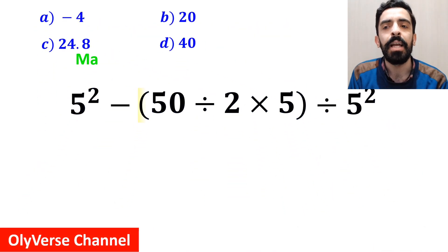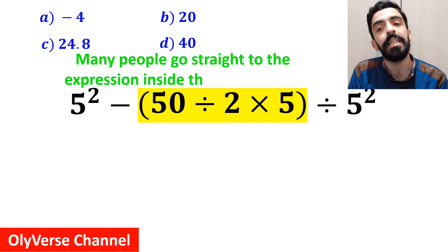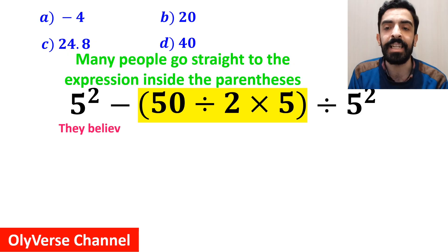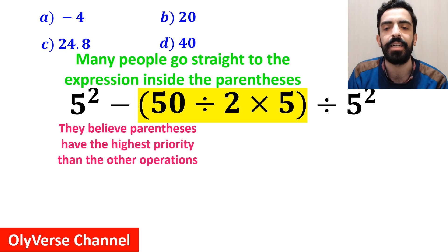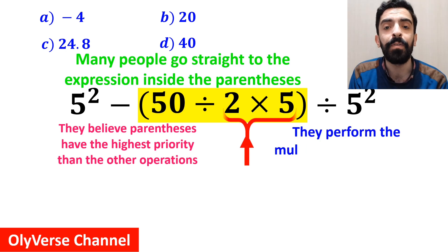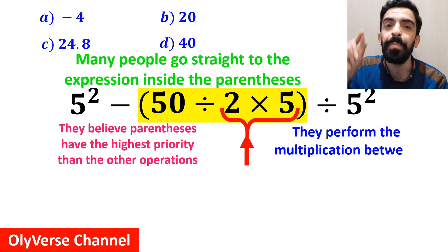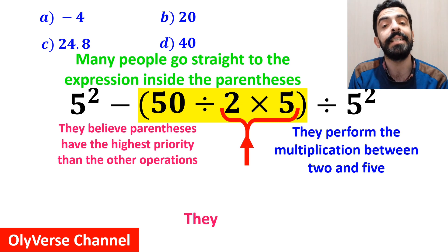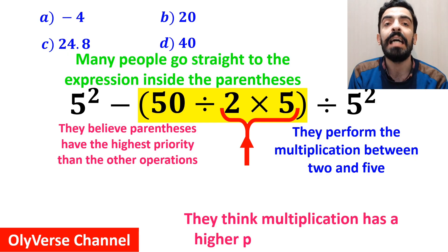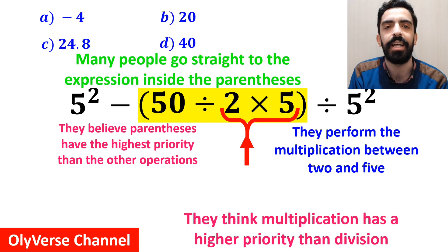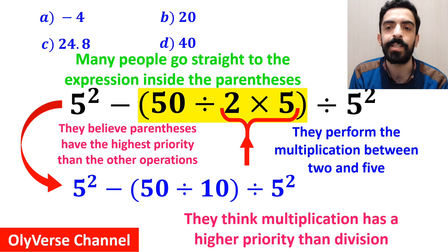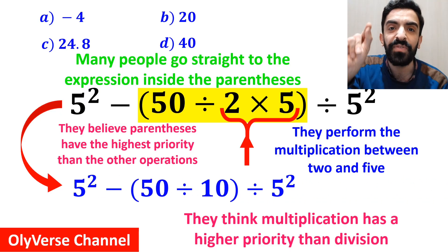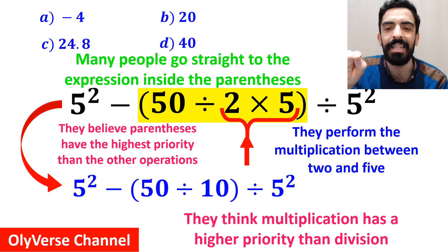At the beginning, many people go straight to the expression inside the parenthesis because they believe parenthesis have a higher priority than the other operations. They immediately perform the multiplication between 2 and 5, thinking multiplication has higher priority than division. So they simplify this to 5 squared minus 50 divided by 10 inside the parenthesis, then divided by 5 squared.